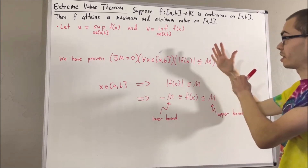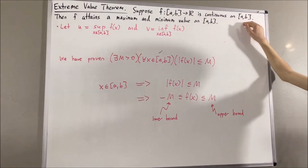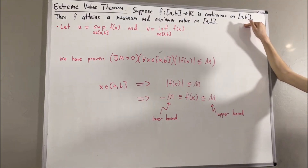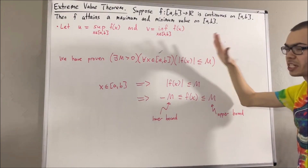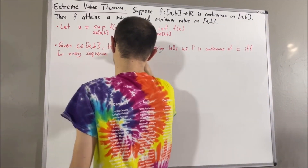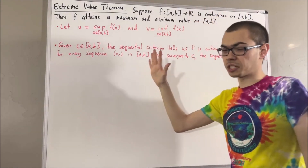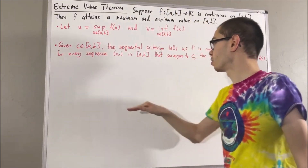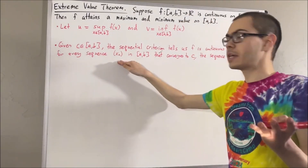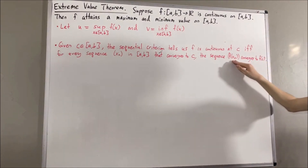In proving this theorem, we're going to use some properties about continuity and convergent sequences. To say that f is continuous on [a, b] means f is continuous at every point in [a, b]. We're going to use the sequential criterion for continuity: if c is any real number in [a, b], then f is continuous at c if and only if for every sequence x₁, x₂, x₃, … in [a, b] converging to c, the sequence f(x₁), f(x₂), f(x₃), … converges to f(c).